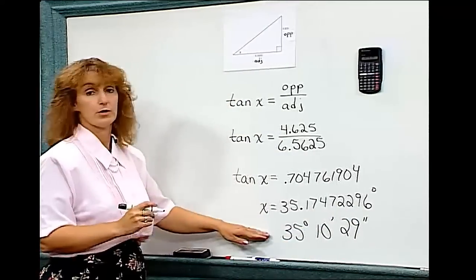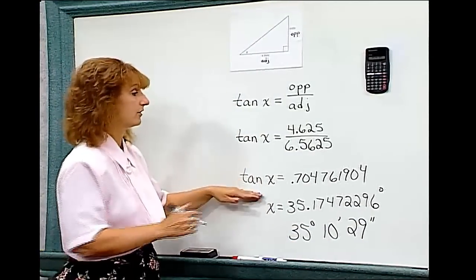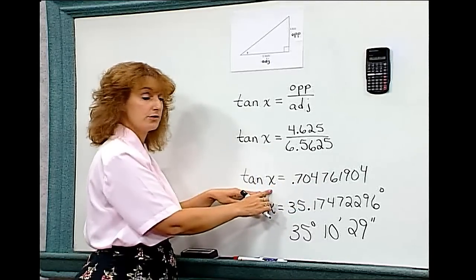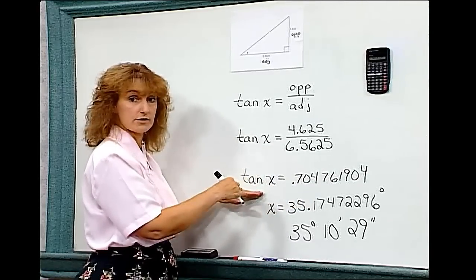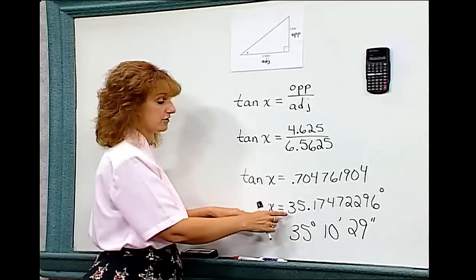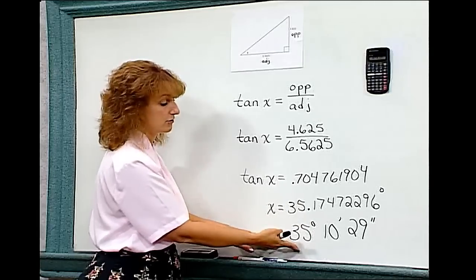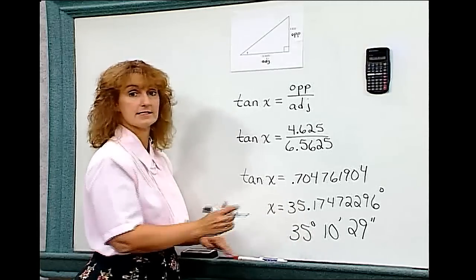So you need to remember when you enter this into your calculator, once you divide, you don't have your answer. You need to use your second or inverse button and then your trig function to get the decimal degree, and then your DMS button to change it back into degrees, minutes, and seconds.